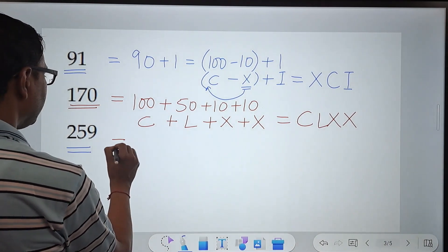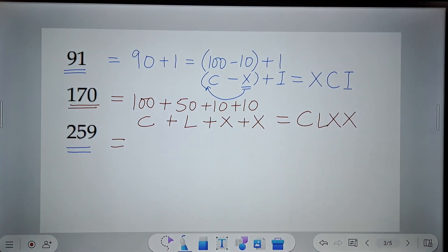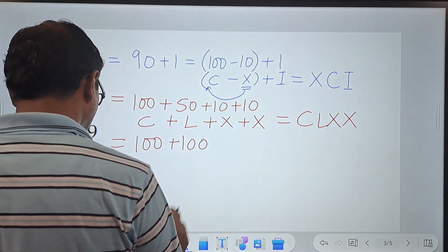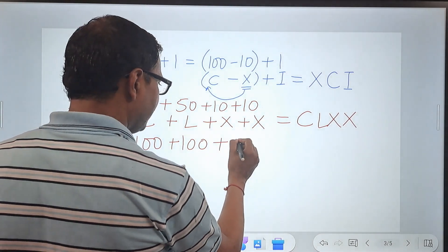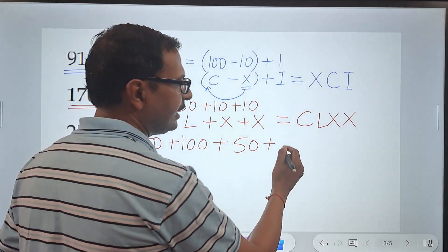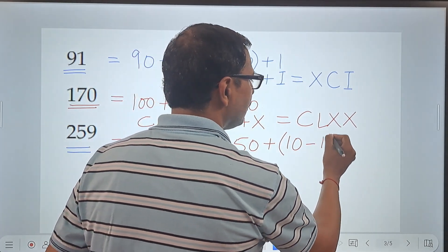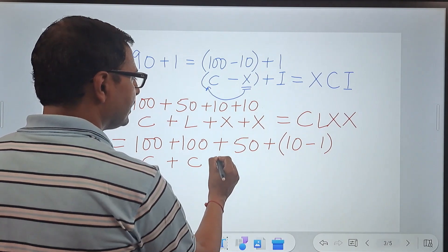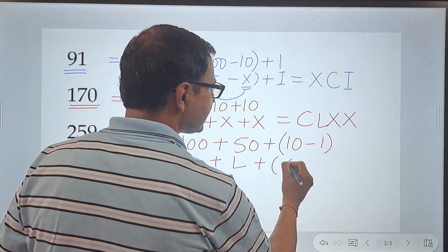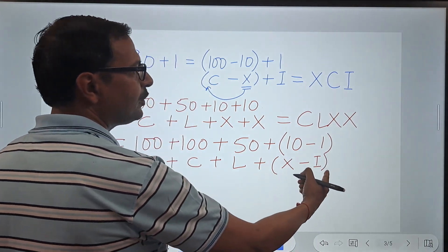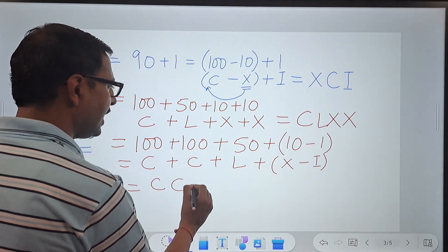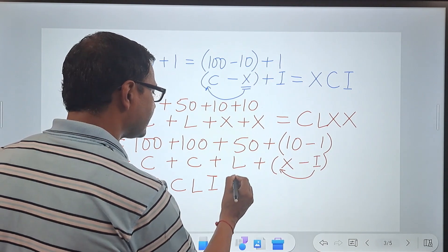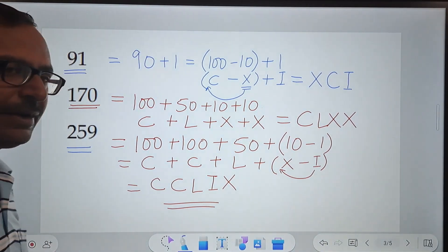Likewise, if you have to convert 259 to its Roman equivalent, what do we have to do here is 200 is 100 plus 100. And now, how do you write 59? 59 is 50 plus 9. But I don't have a Roman number for 9. So I will write 9 as 10 minus 1. And now, let's write the Roman equivalence. 100 is C. This is also C. This is L plus this is X minus I. And I told you whenever you have to subtract, what do you do there? C C L. That is fine. Here, I is to be prefixed. So IX and this becomes the Roman equivalent of 259.